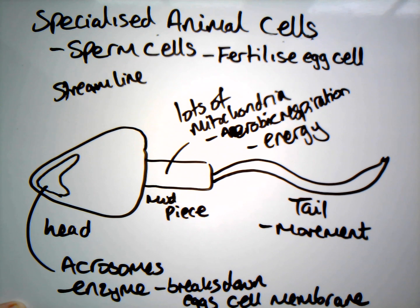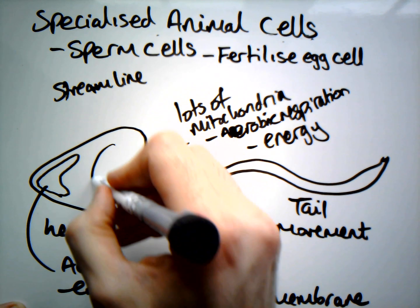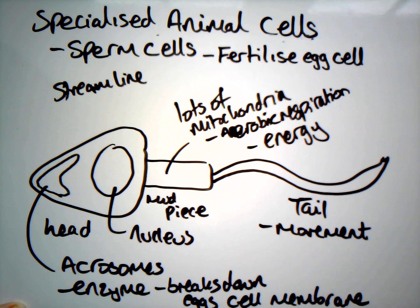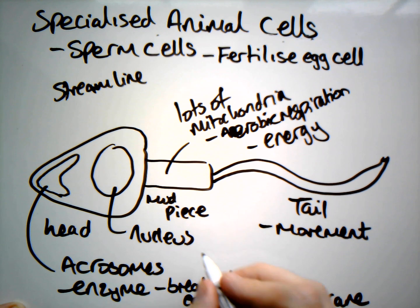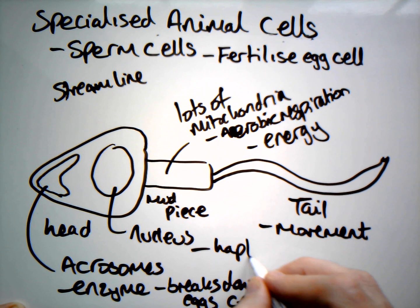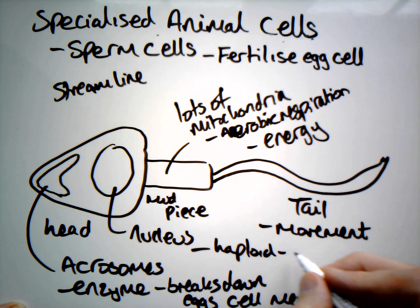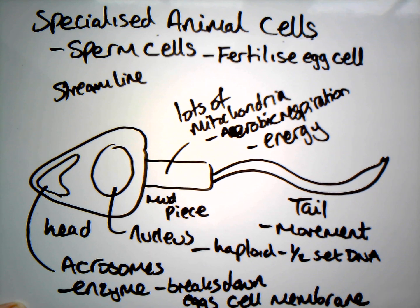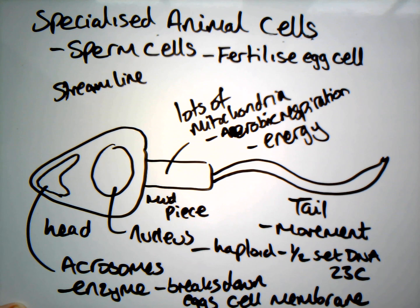The final structure within the head is the nucleus. This nucleus is different from other animal cells — it is haploid, meaning it has half a set of genetic information: 23 chromosomes. You need 23 chromosomes from your father and 23 from your mother, combined to make a full set of 46. And that's everything you need to know about sperm cells.